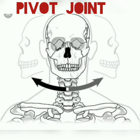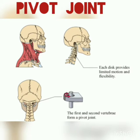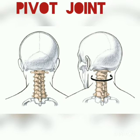Pivot joint. A pivot joint is found between the skull and the first two vertebrae of the spine. The uppermost vertebra in the neck is called the atlas. We can move our head sideways, upwards, and downwards with the help of the pivot joint.